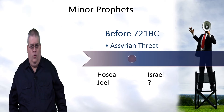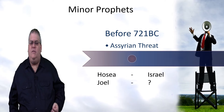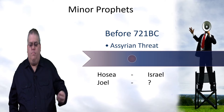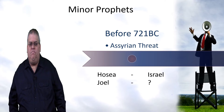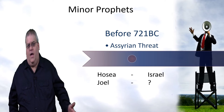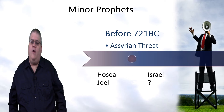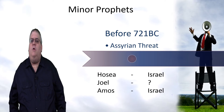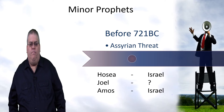The next is Joel. Now the date and the place of Joel is very uncertain, but if we do trust the order put in by the ancients, then Joel is probably early, around the time of Hosea or Amos. And the next is Amos, which was written to the northern kingdom.